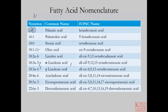Under their IUPAC names, the only designation that differs is the numbering — the position — of the double bonds. You have all-cis-9,12,15-octadecanoic acid versus all-cis-6,9,12-octadecanoic acid.